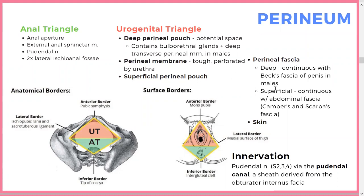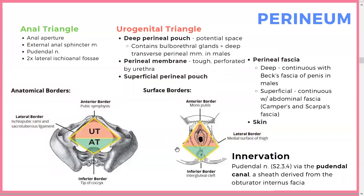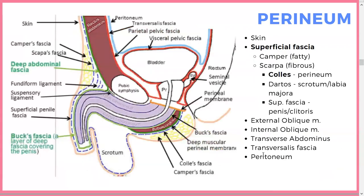The perineal fascia is important — all those layers have many different names. The urogenital triangle includes deep and superficial fascia: the deep is continuous with the fascia of the penis in males, and the superficial is continuous with the abdominal fascia — Camper's and Scarpa's. The innervation is pudendal, and the pudendal nerve comes through the pudendal canal derived from the obturator internus fascia.